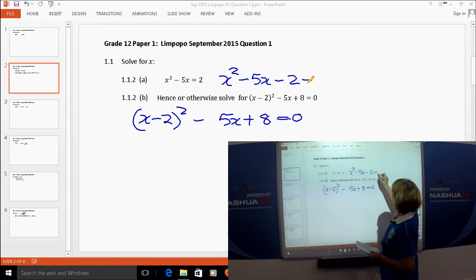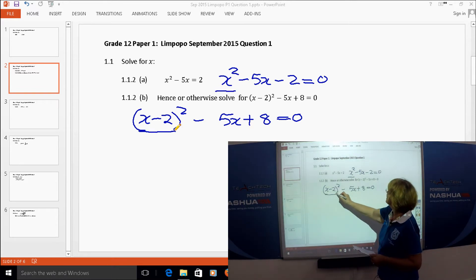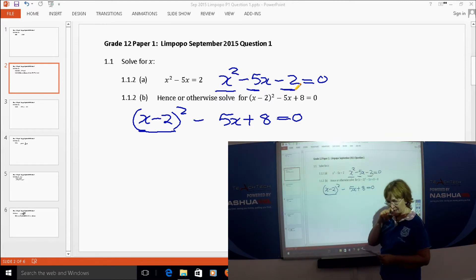Minus 2. Well, we have the square there, we have the negative 5 there, but how in the world are we going to get that negative 2? So let's see.